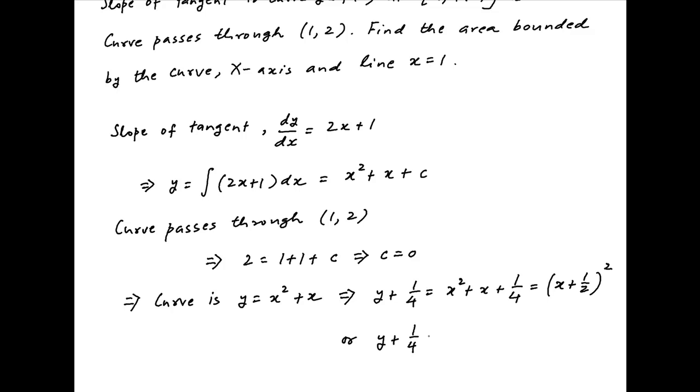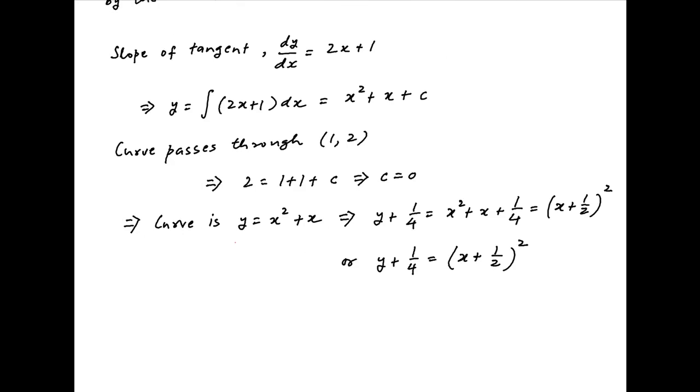Therefore the equation of the curve can also be written as y plus 1/4 is equal to (x plus 1/2) whole square. Now from the equation y is equal to x square plus x it follows that the curve passes through the origin because (0, 0) satisfies the equation of the curve.